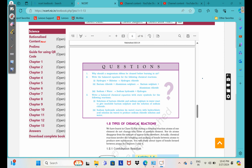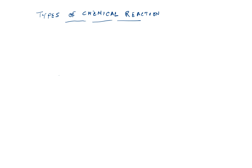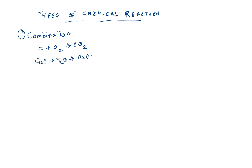Now if we talk about the different kinds of reaction, number one is combination reaction. We have carbon plus oxygen gives carbon dioxide. Or we can have calcium oxide plus water, which gives calcium hydroxide — that is slaked lime, Ca(OH)₂. This is combination reaction.